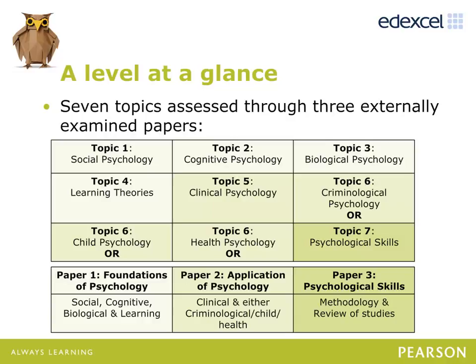Paper 1 covers five sections including Social, Cognitive, Biological, Learning, and Issues and Debates. Paper 2 covers Clinical Psychology and an option from Health, Criminological or Child. Paper 3 is more of a synoptic revision paper, which looks at debates, issues, methodology and studies. In the full event, we will go through the content of each of these sections in greater detail and can share some ideas on different possible ways to deliver these and assess students.